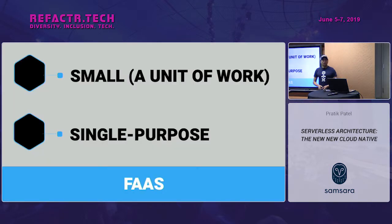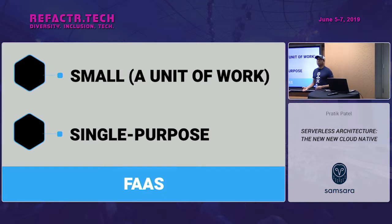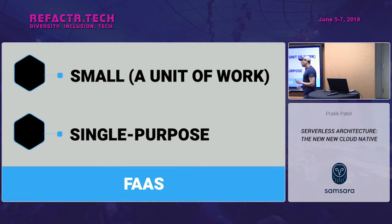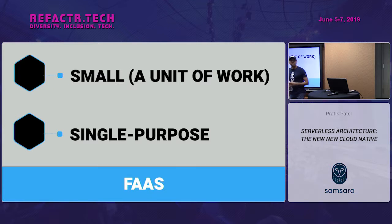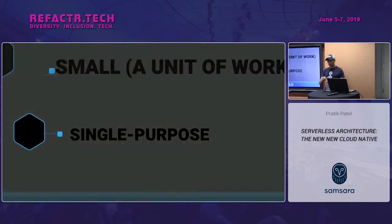Our cloud functions need to be small — a unit of work — and they should also be single purpose. You can have cloud functions that do multiple things, but you have to be smart about not putting too much in them. We don't think in terms of microservices. Cloud functions are the tip of that microservices pyramid; I almost think of them as nano services, as opposed to microservices. We're making things smaller and smaller so we can get composability and more flexibility out of our architecture.